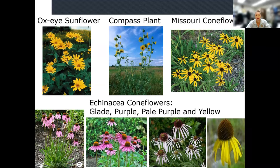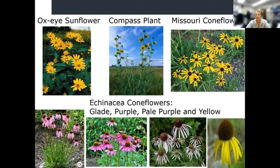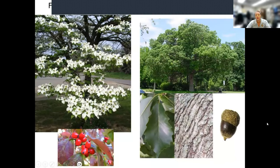The glade coneflower is very different from purple coneflower. The purple coneflower that's commercially grown — you can get cultivars at Lowe's, Home Depot, or Walmart — actually likes a bit more shade and can get competitive and take over an area. I like glade coneflower and the yellow coneflower because they stay in one spot and don't outcompete other plants.